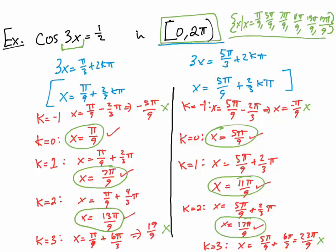One last observation before moving on: notice the pattern. From the first equation, going from negative 5 pi over 9 to pi over 9 to 7 pi over 9 to 13 pi over 9 to 19 pi over 9, we're adding 6 pi over 9 each time. The same happens on the right-hand side — adding 6 pi over 9 each step. As you do more of these equations, you'll pick up on this pattern and get solutions much more quickly.